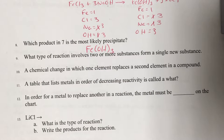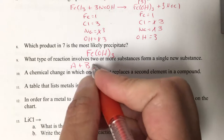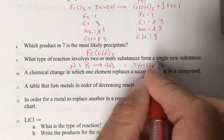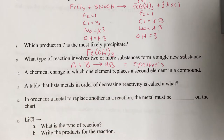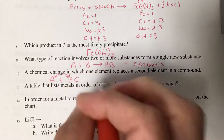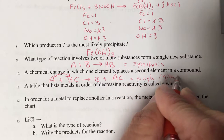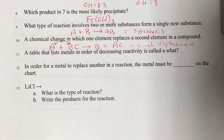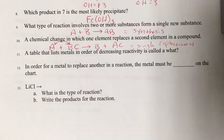Question nine: what type of reaction involves two or more substances forming a single new compound? Two things joining together — that is synthesis. A single product with no plus sign on the product side is the key giveaway. A chemical change where one element replaces another element in a compound is single replacement, also called single displacement. A table listing metals in order of decreasing activity — most reactive to least reactive — is called an activity series.